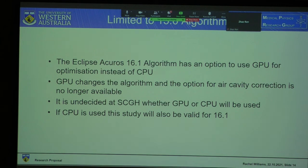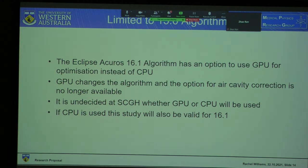Question: You mentioned using the average tissue density as a bulk correction — is that something that's been done before or something you're trialling in this study? Response: I believe it has been used before, yes. But in Eclipse, we're going to confirm it should be doing the same thing — that's what we need to find out.